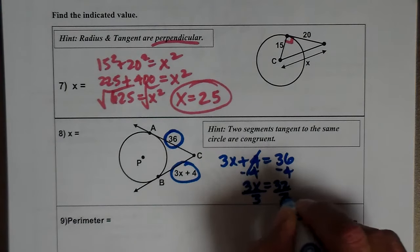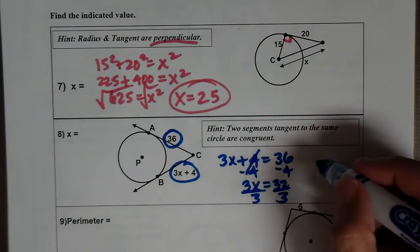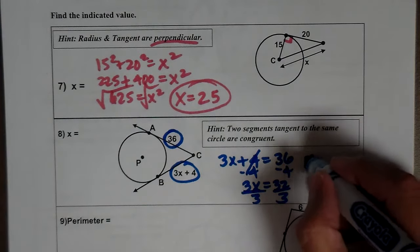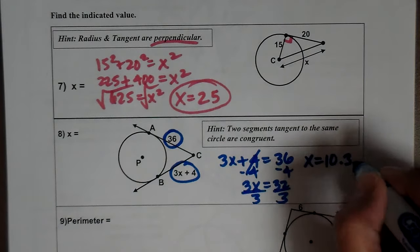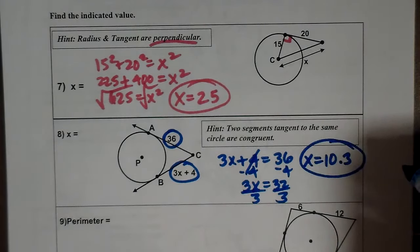I divide by 3, so I get 10.3, which is the same as 10 and 2 thirds. And that's it.